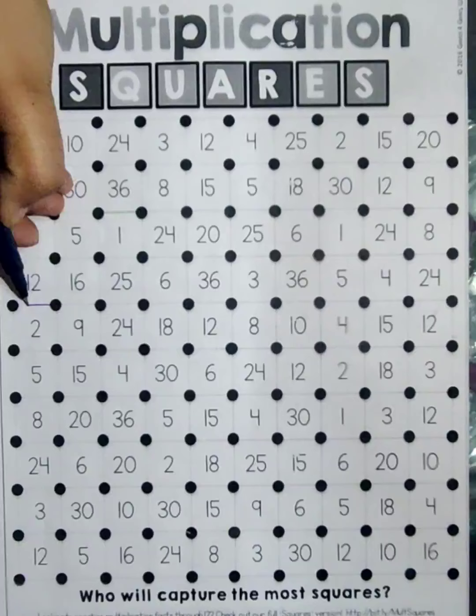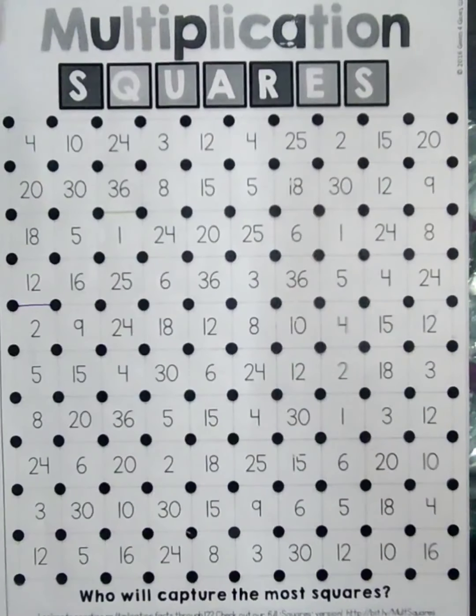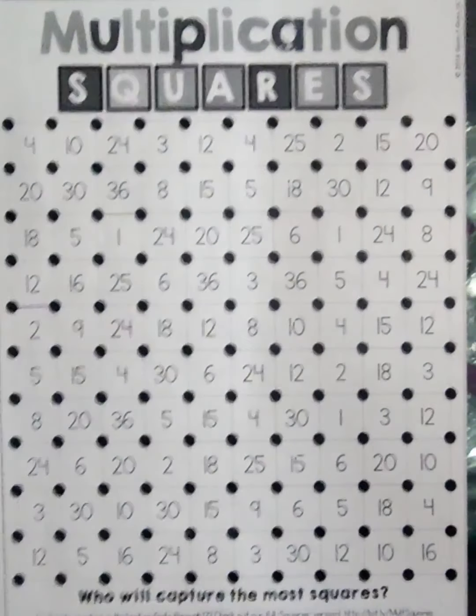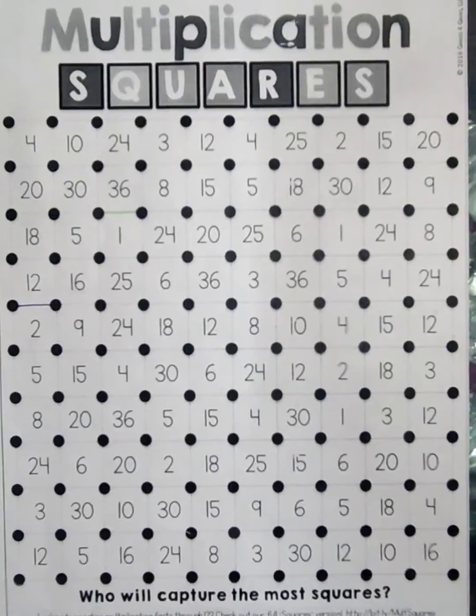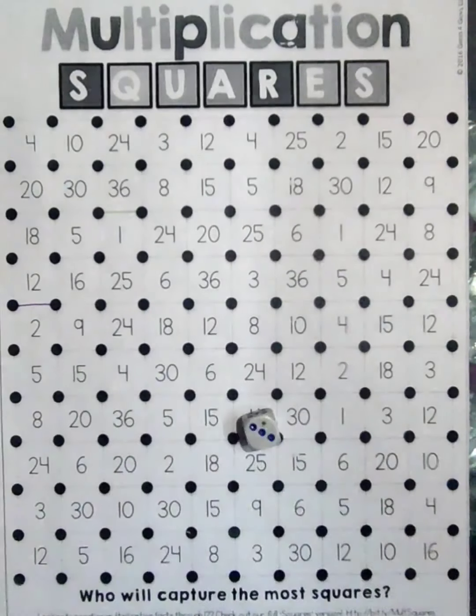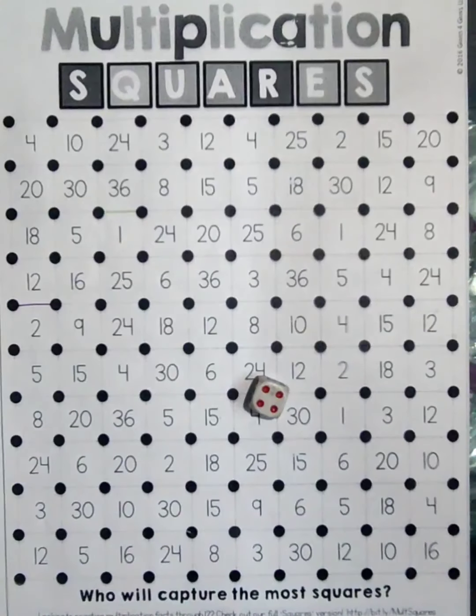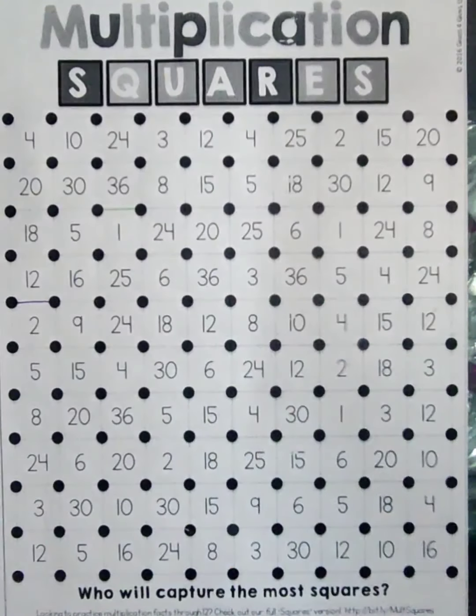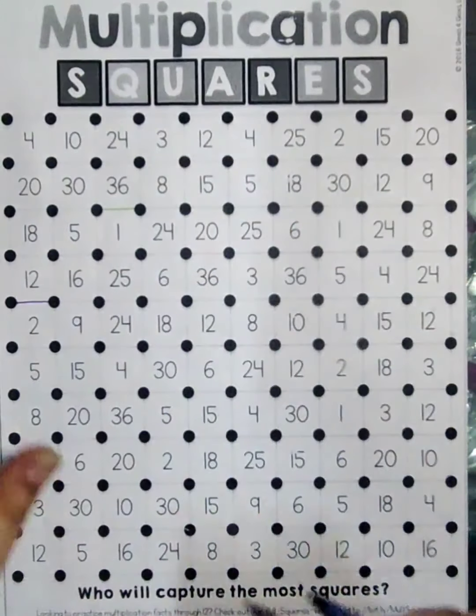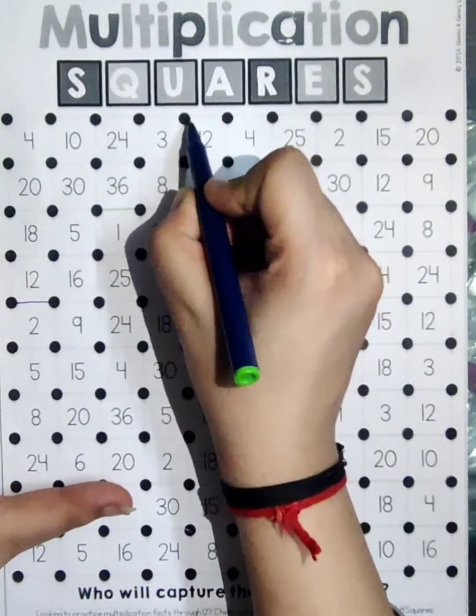Similarly, we will again be rolling the dice. This time I got three and then four, so three times four is twelve. I look where this twelve is written and it's here, so I will simply join my line here.